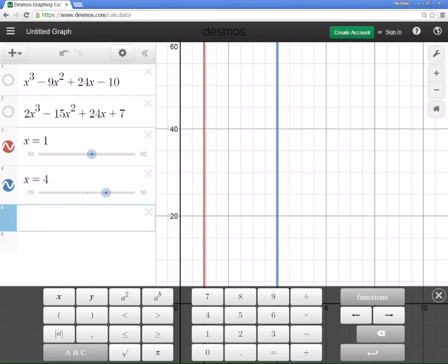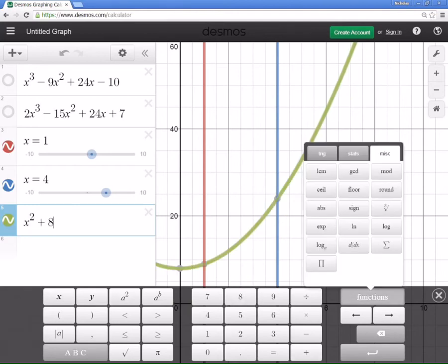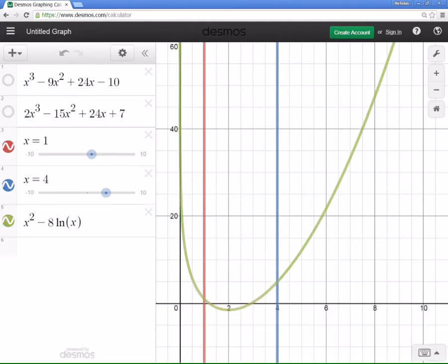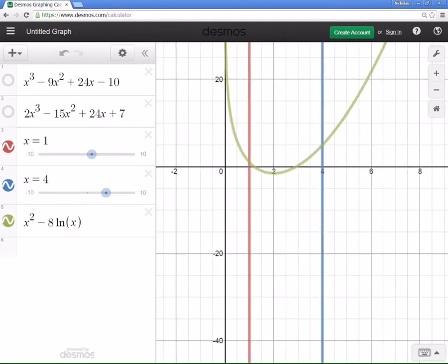Okay, now it was X, was it X squared? Yeah. All right, and then minus 8 natural log, which is, whoops, minus 8, okay, natural log, so just minus 8 natural log of X. Boom, shakalaka. Yeah, can you guys see it? Yes.